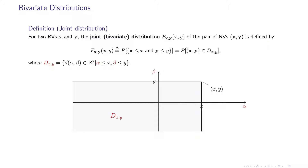The joint CDF, or joint cumulative distribution function, is defined as the probability that these random variables are smaller than or equal to these values, and these random variables are smaller than or equal to these values. You can extend this definition to three random variables as well. The joint means that jointly this event and this event happen, so here we have an intersection — and for abbreviation we put a comma here.